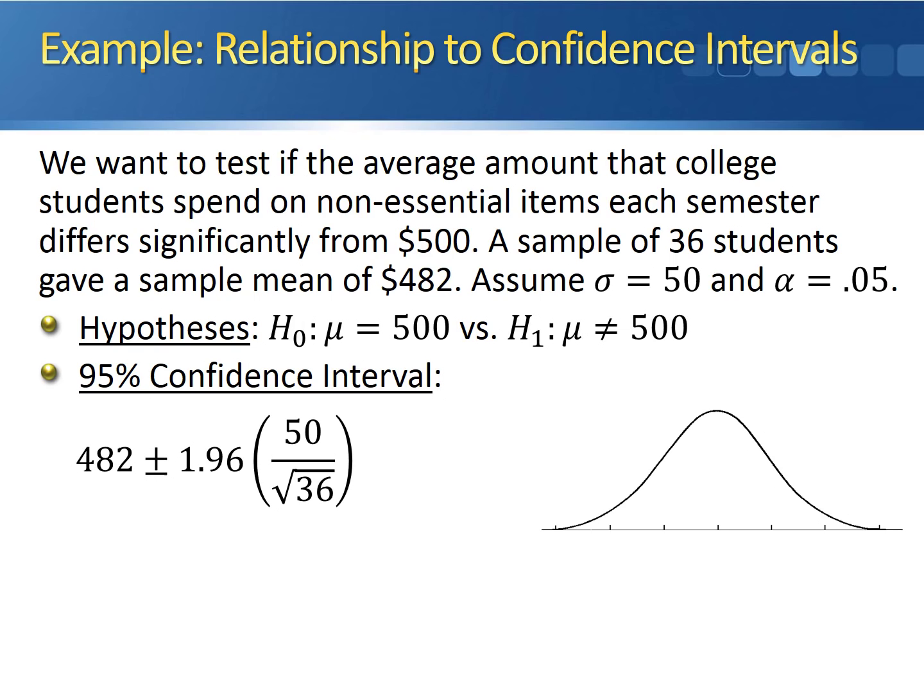Our confidence interval is going to be the sample mean 482, plus and minus 1.96 times the standard deviation 50, divided by the square root of the sample size 36.